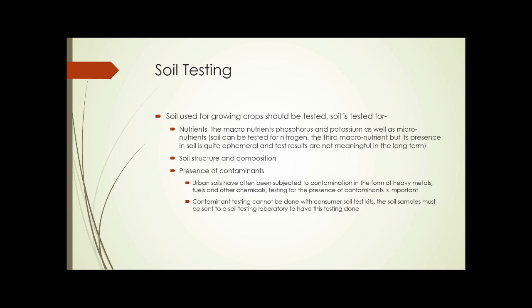Soil used for growing crops should be tested for nutrients — the macronutrients phosphorus and potassium, as well as micronutrients. Soil can be tested for nitrogen, the third macronutrient, but its presence in soil is quite ephemeral and test results aren't meaningful in the long term. The results apply for the first crop planted and not beyond that.